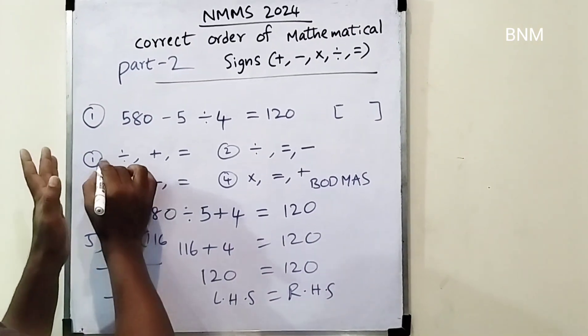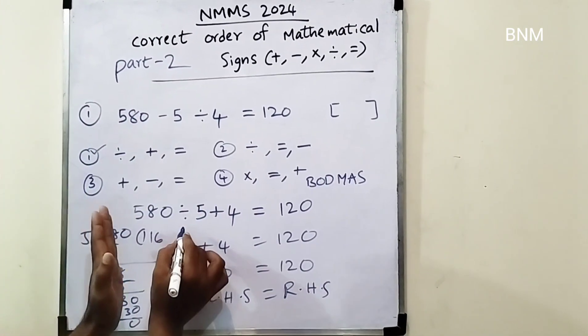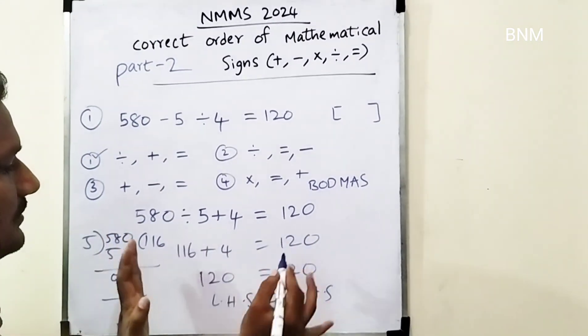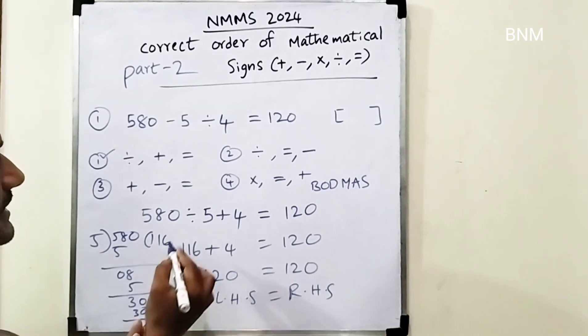We have to do the first option: division, then plus, then equal, then equalize.